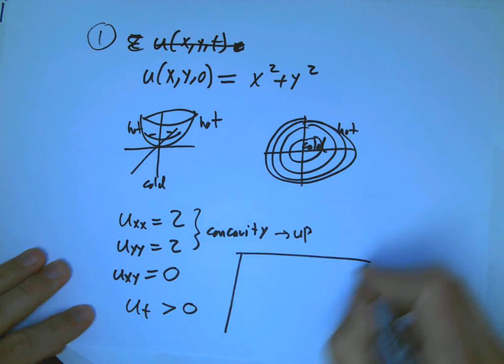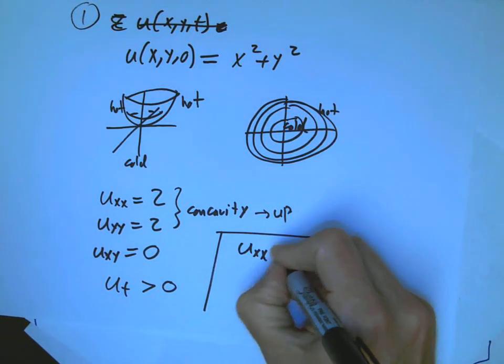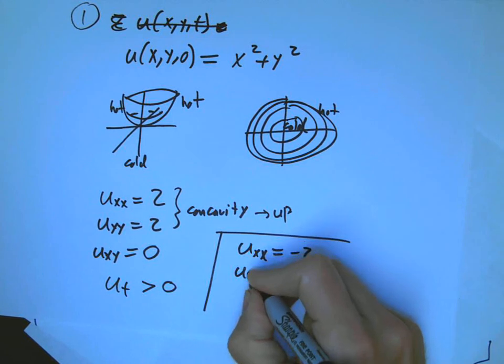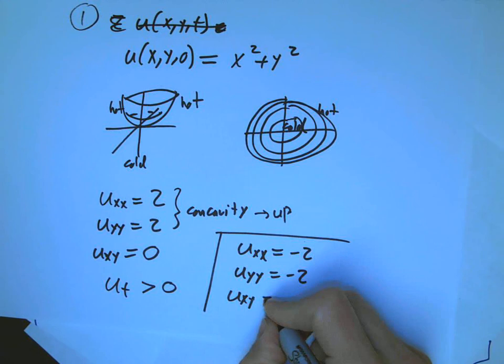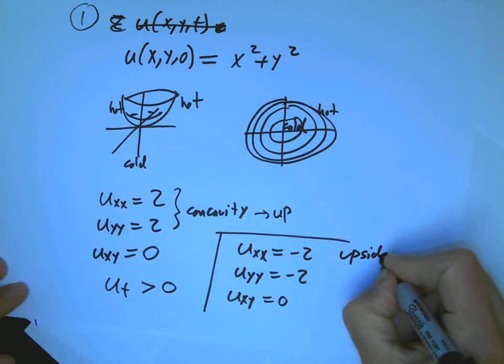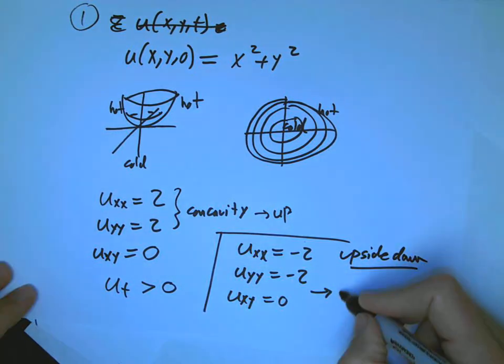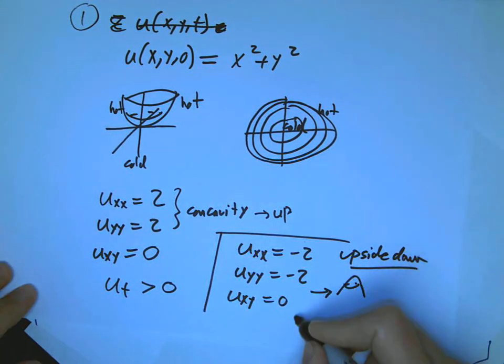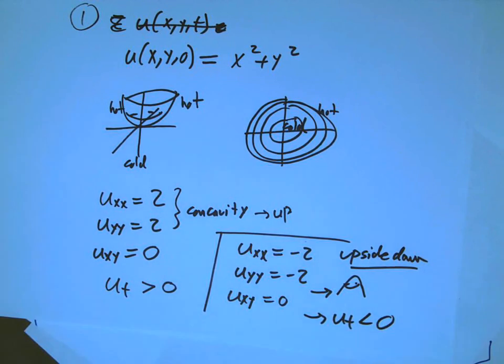If I flip the whole thing upside down, if I just flip it upside down, and if I had it being more like a max and concave down, this is the upside down version, then that would be something like a maximum, and that should be getting colder.